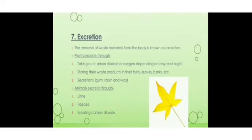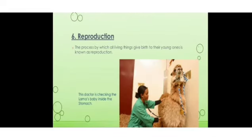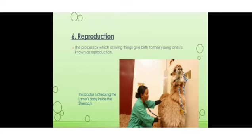You can see the process of reproduction. What is reproduction? All living beings — animals, human beings, and plants — produce young ones of their own kind. A dog gives birth to a dog, a cat gives birth to a cat, and human beings give birth to a human baby. That process is called reproduction.